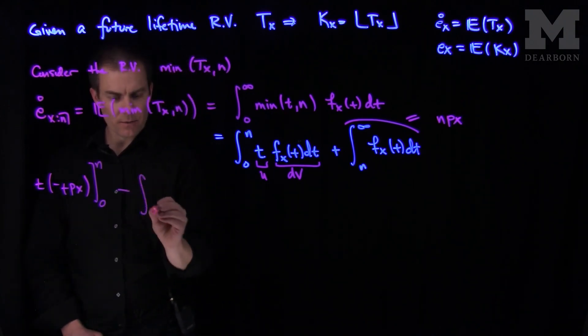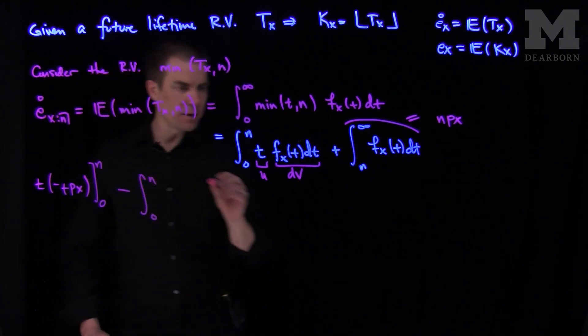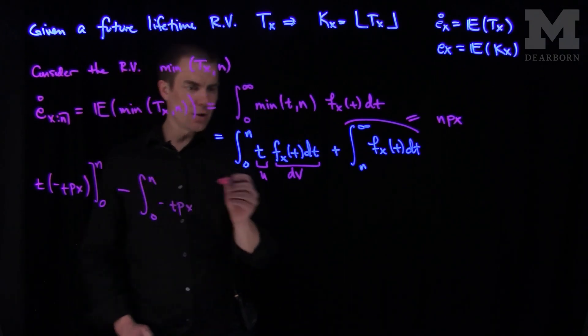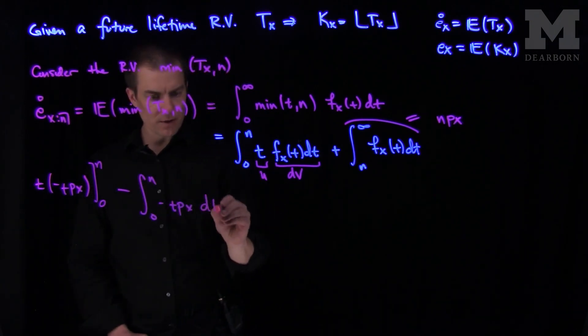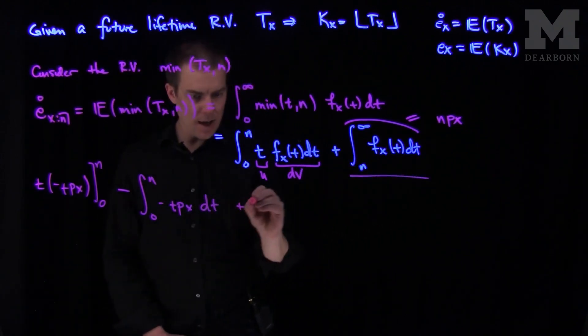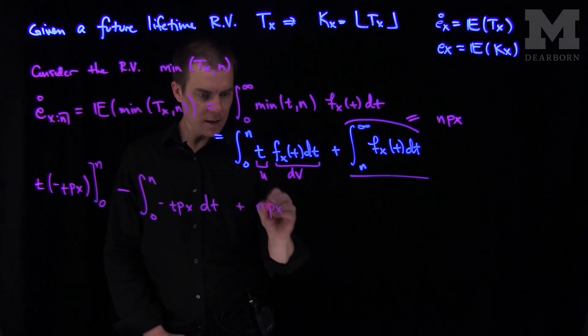I'll go from zero up to n. And then minus the integral from zero to n of v, which is going to be negative t px. And then a du, which would just be a one. So I'll have a dt over here.